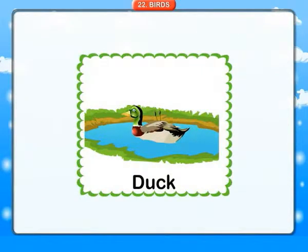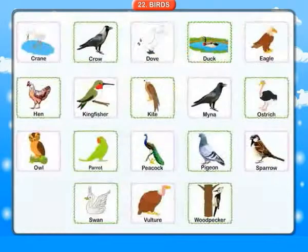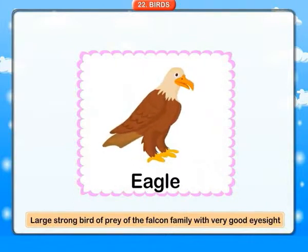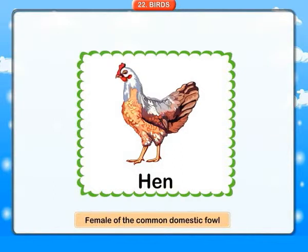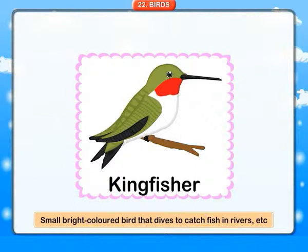Duck: any of various kinds of common water bird, domestic and wild. Eagle: a large strong bird of prey of the falcon family with very good eyesight. Hen: the female of the common domestic fowl. Kingfisher: a small bright-colored bird that dips to catch fish in rivers, etc.